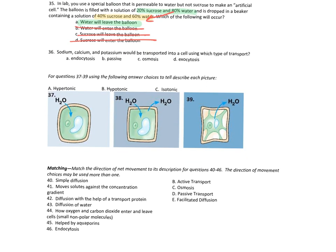Sodium, calcium, potassium — would be transported into the cell using what type of transporter? Let's go through the list. Osmosis — no, that's water. Exocytosis — that's leaving and it's for big particles. Endocytosis — that's coming in but also big particles. The only one left is passive transport. That's your answer.